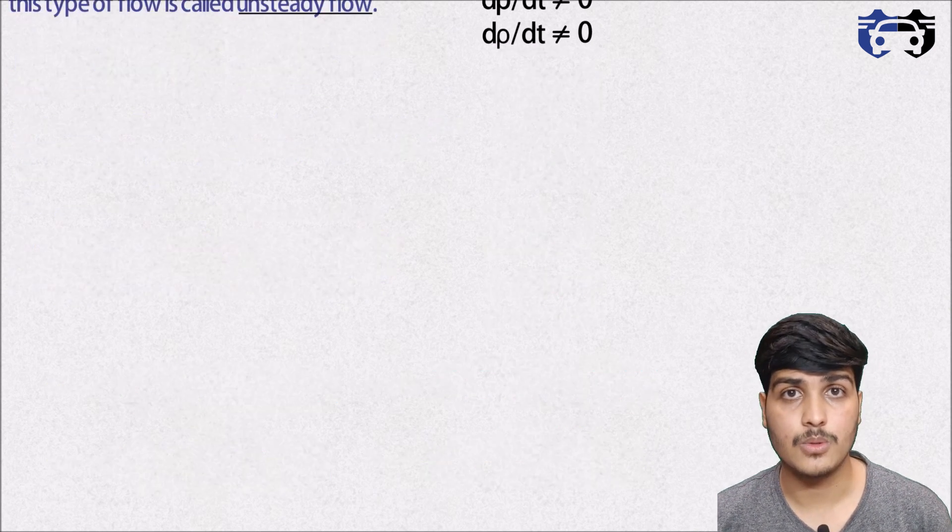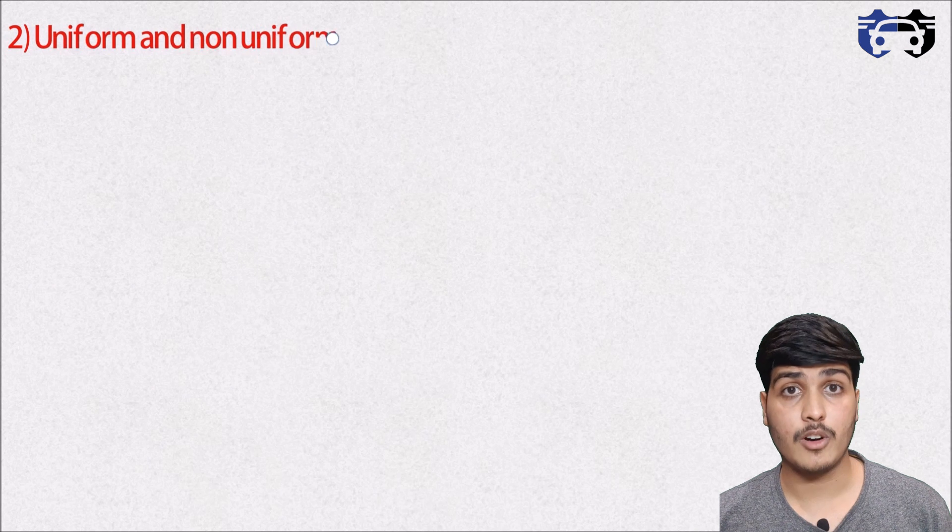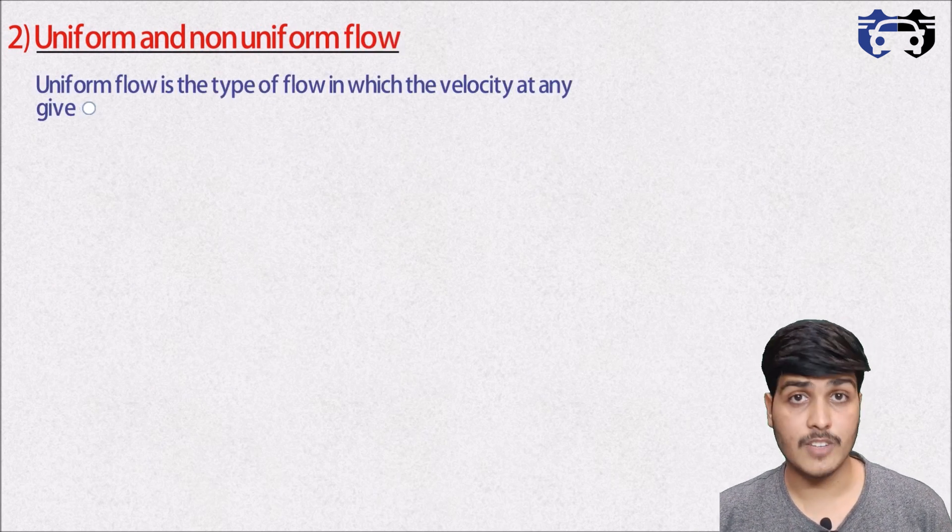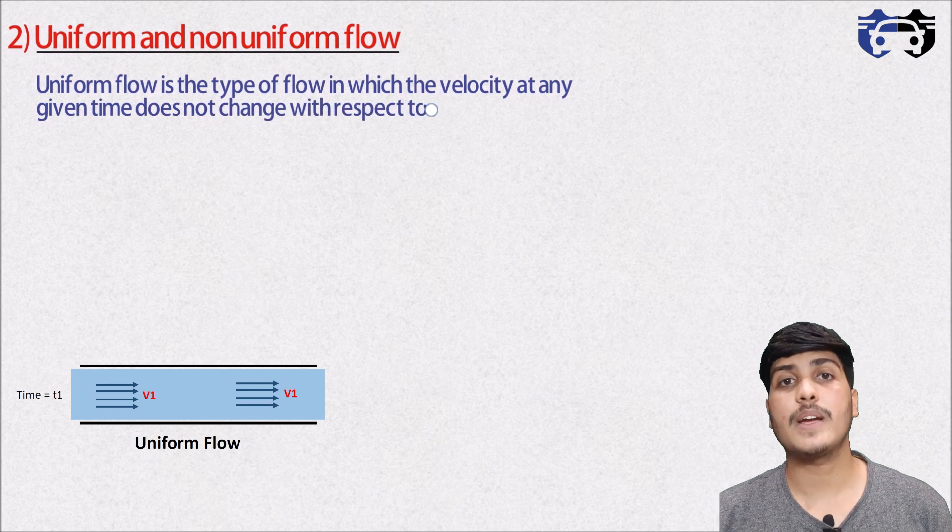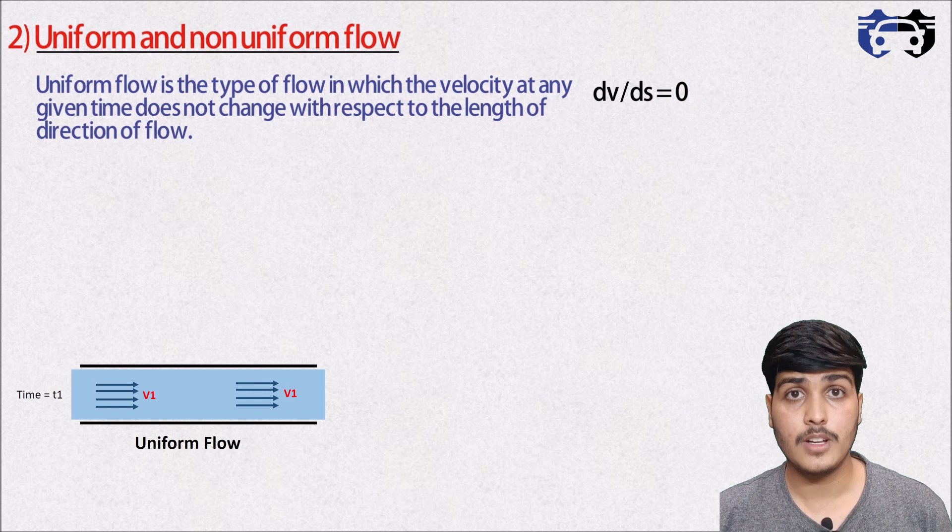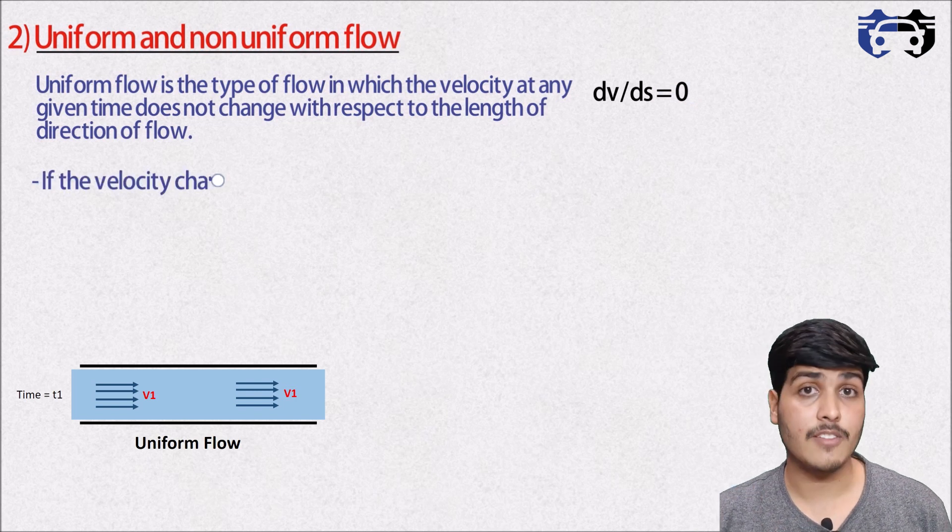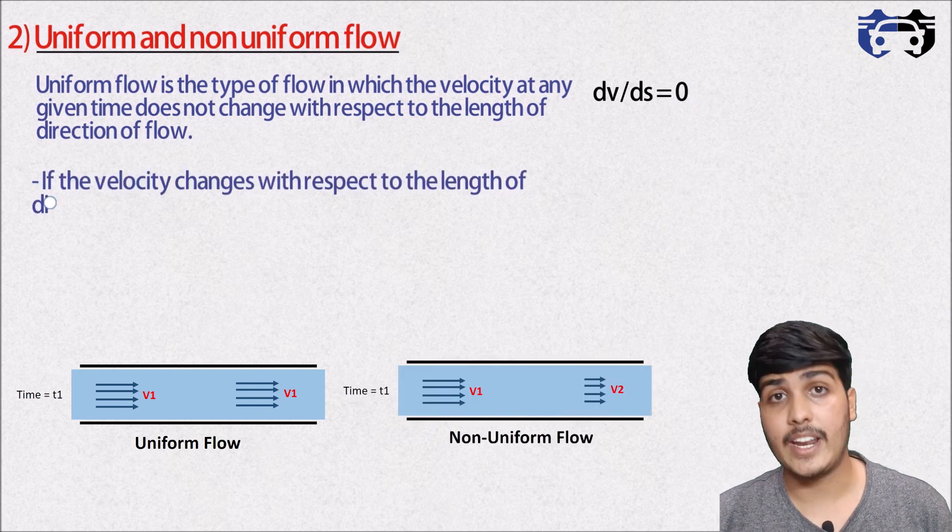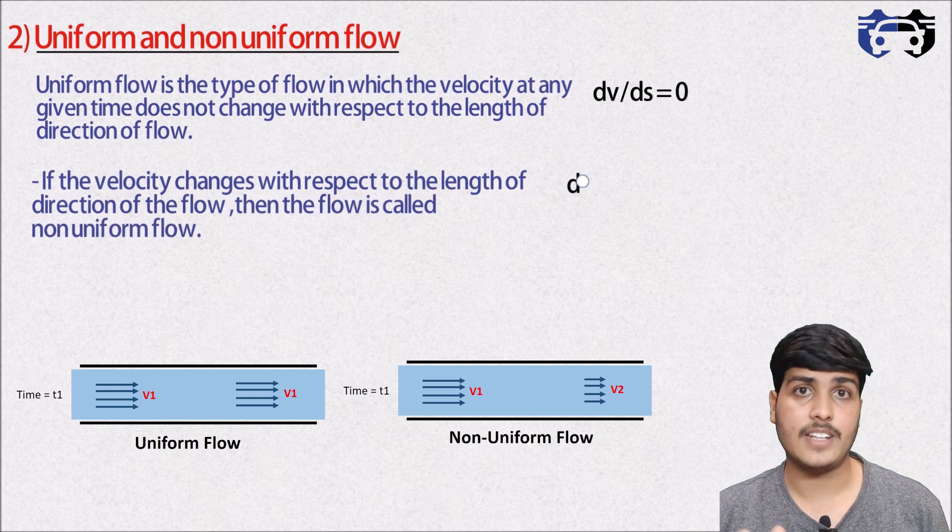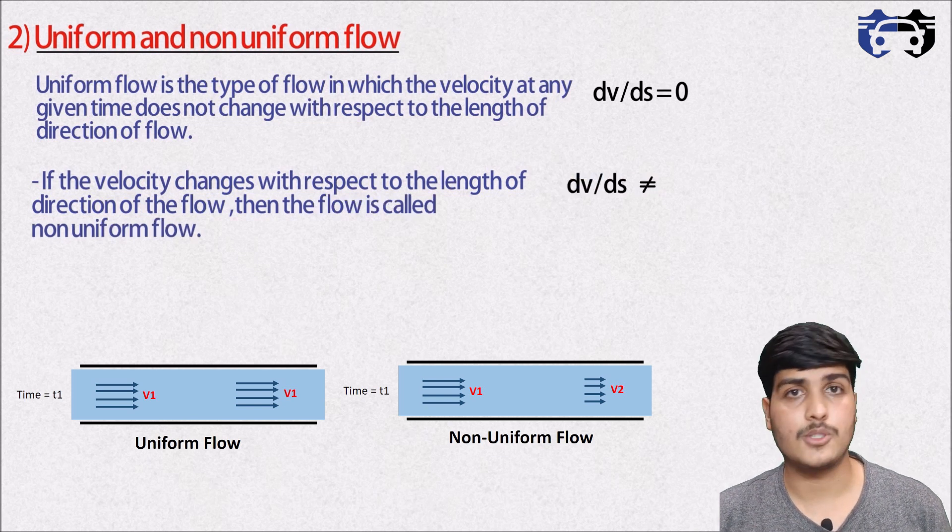Number two is the uniform and non-uniform flow. Uniform flow is a type of flow in which the velocity at any given time does not change with respect to the length of direction of flow. That is dv/ds = 0. And if the velocity at any given time changes with the length of direction of flow, then this type of flow is called the non-uniform flow. That is dv/ds ≠ 0.